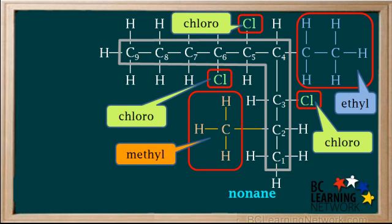The compound name must contain the names of the groups in alphabetical order, where prefixes like di and tri are not counted. In naming alkanes, it's always easiest to start at the end and work toward the beginning. We already have the end of the name: nonane. In alphabetical order, the names of the groups are chloro, ethyl, and lastly methyl. So methyl would come last in the name.